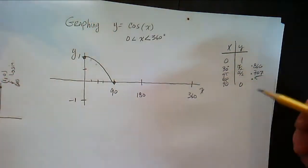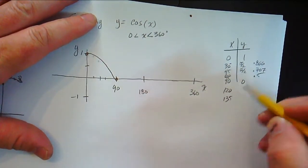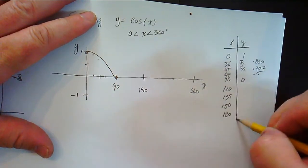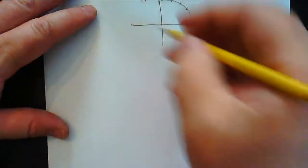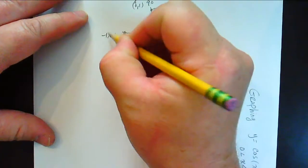All right, now if we continue into the second quadrant, right? We've got 120, 135, 150, and then 180. Well if we go back here to our unit circle, this is 180 degrees over here, the coordinate right here is negative 1, 0, you see?